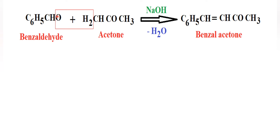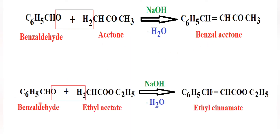If only one molecule of benzaldehyde is used, we get benzylideneacetone. When benzaldehyde is treated with ethyl acetate — an aliphatic ester — condensation occurs with removal of one molecule of water in the presence of 10% alkali, and we get ethyl cinnamate, another alpha-beta unsaturated compound.